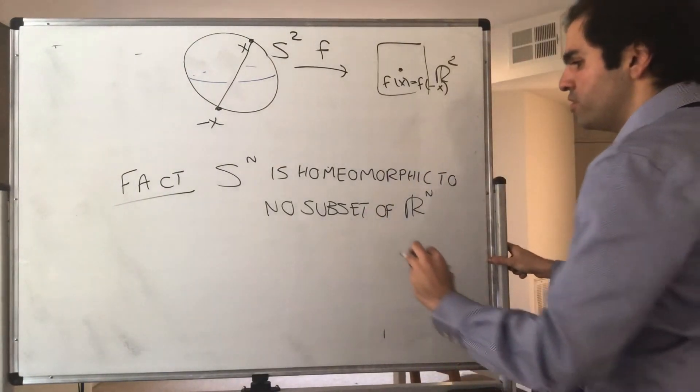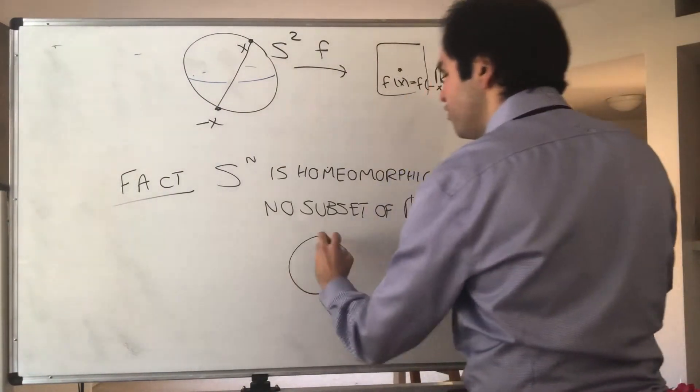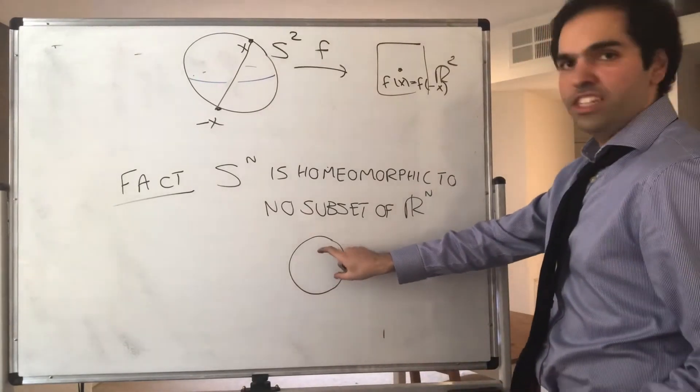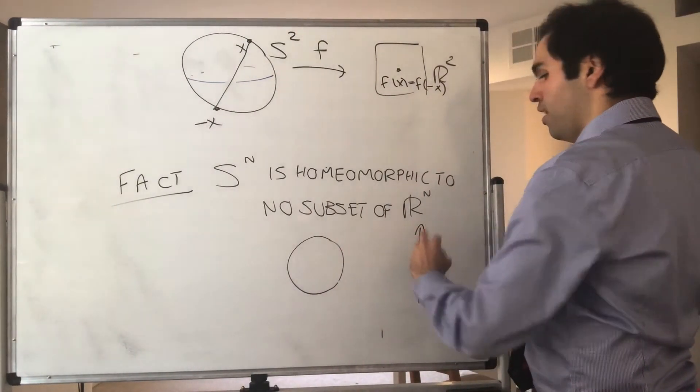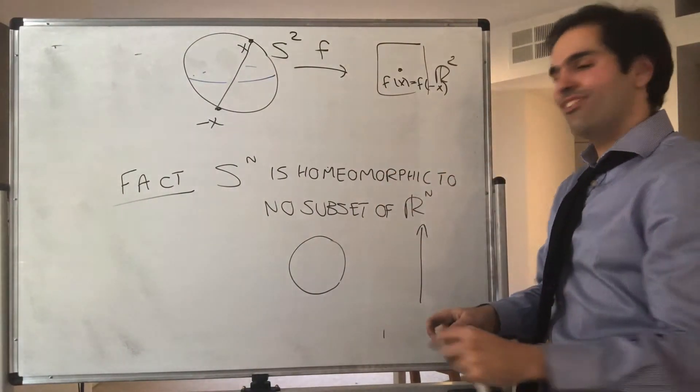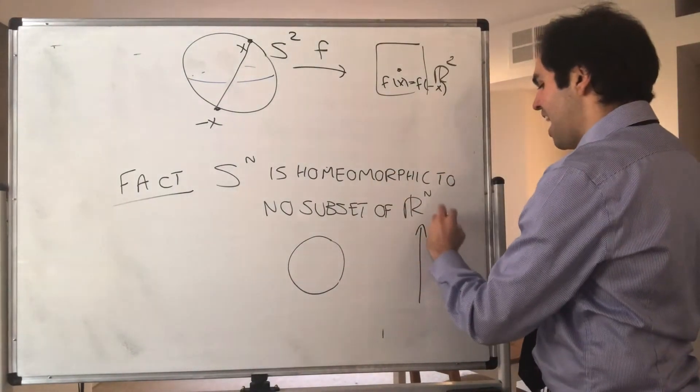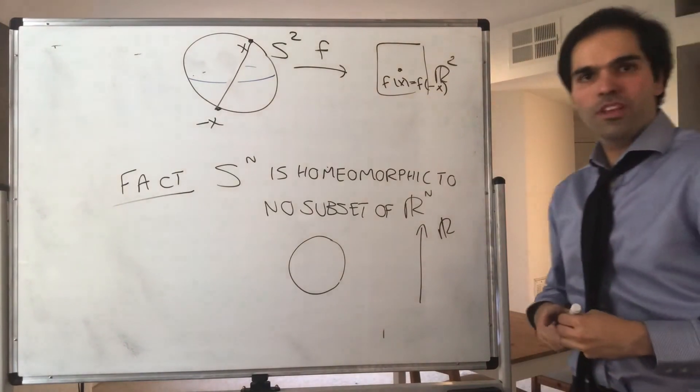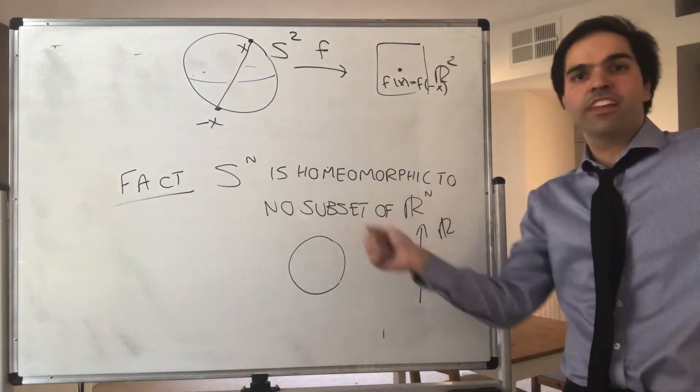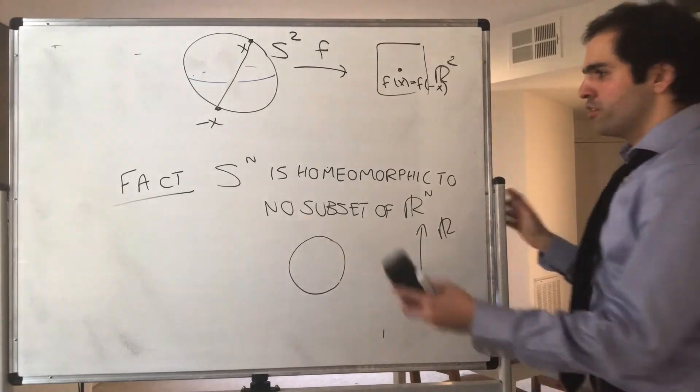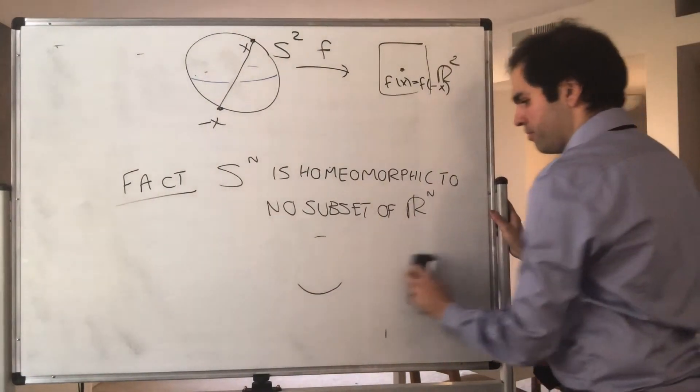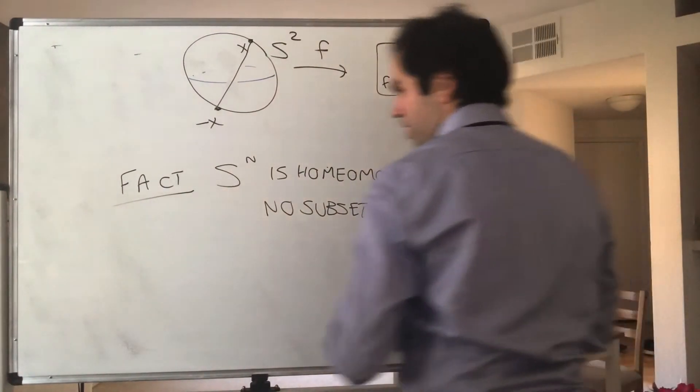So for instance, there's no way of deforming the sphere, the circle, to get, there's no way of continuously deforming the circle to get actually a subset of Rⁿ. What you would have to do is maybe tear down the circle or do anything else. And here's the proof, super neat. Why?